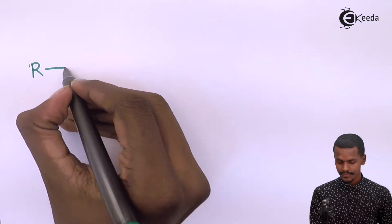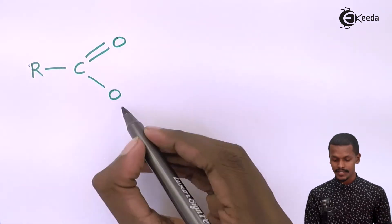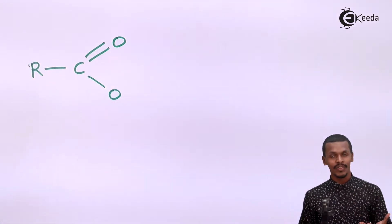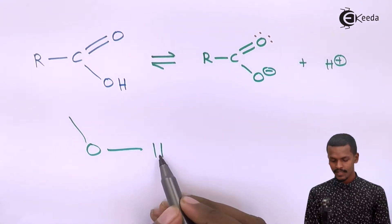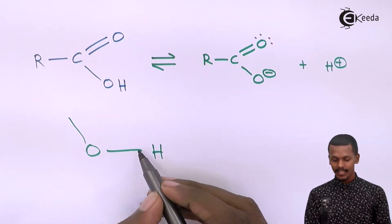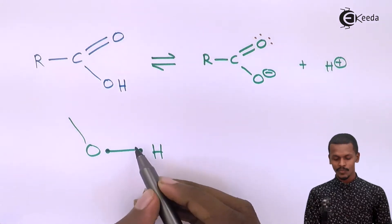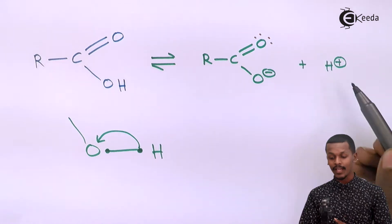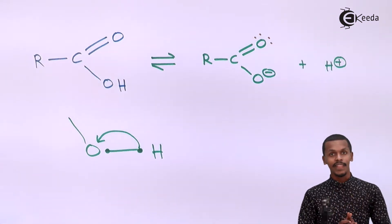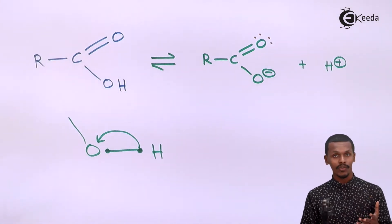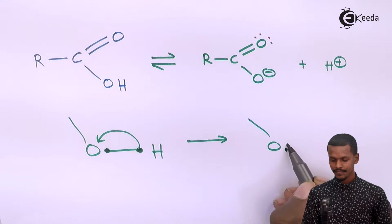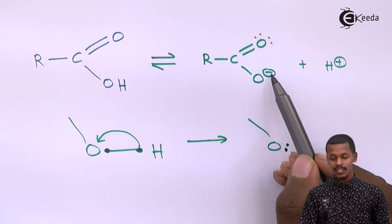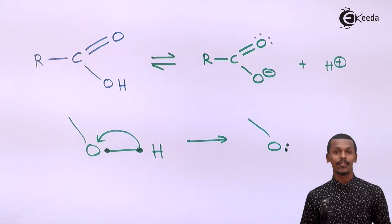The carboxylate ion can be written such that one oxygen carries a negative charge — the pi electrons. The OH group lost H⁺ because oxygen approached the hydrogen's electrons, making hydrogen acquire a positive charge and oxygen acquire a negative charge. This oxygen now has two electrons forming a negative charge, which can also be written as a lone pair.